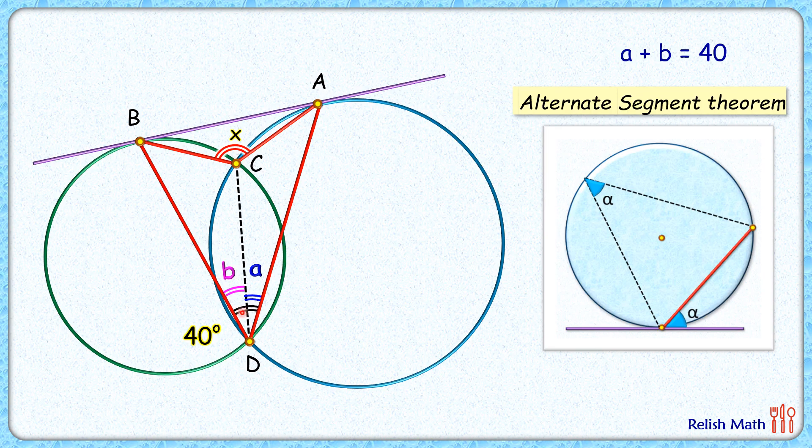So in this blue circle if you see, AC is the chord and this purple line is the tangent. This angle here between chord and tangent will be the same as the angle formed by this AC chord in the remaining part of the segment. So this blue angle here will be a degrees.